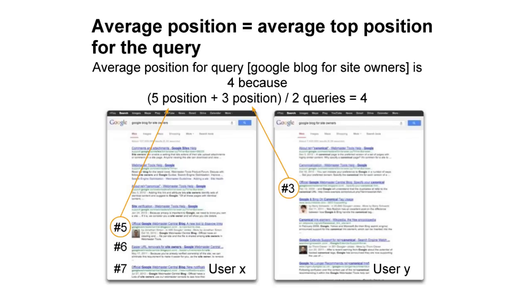The next term is average position. To calculate average position, we take into account the top-ranking URL from your site for a particular query, but often across different users. In the example of the query 'Google Blog for site owners,' we'd use the position of number 5 for the Webmaster Central blog and disregard the later positions for the query for this search. If another user made the same query but our top result was in the number 3 position, the average top position would be 4, since it's the average of 5 and 3.